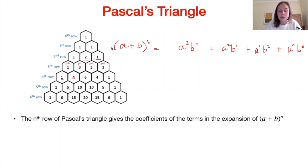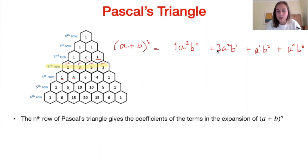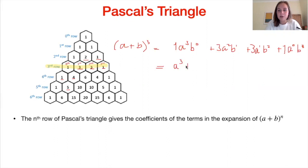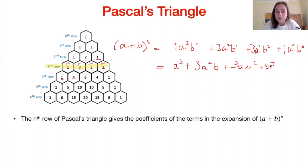Since we want (a+b)^3, n is 3, so we look at the third row of Pascal's triangle. In binomial theorem we always start counting from 0. The coefficients we pick out are: the 0th term has coefficient 1, the next term has coefficient 3, the next also 3, and the final term is 1. Writing this out neatly, we get a³ + 3a²b + 3ab² + b³.